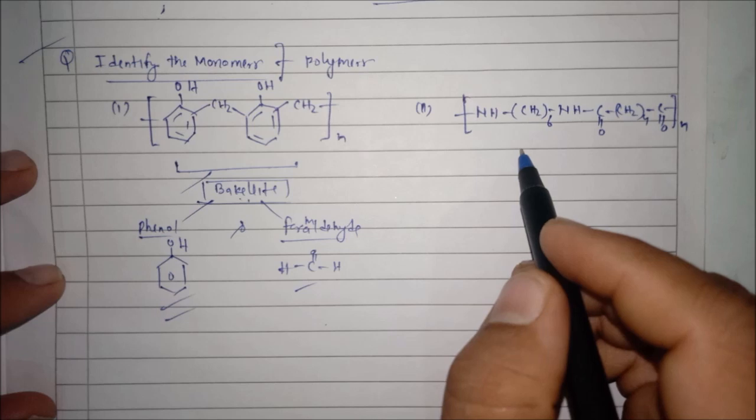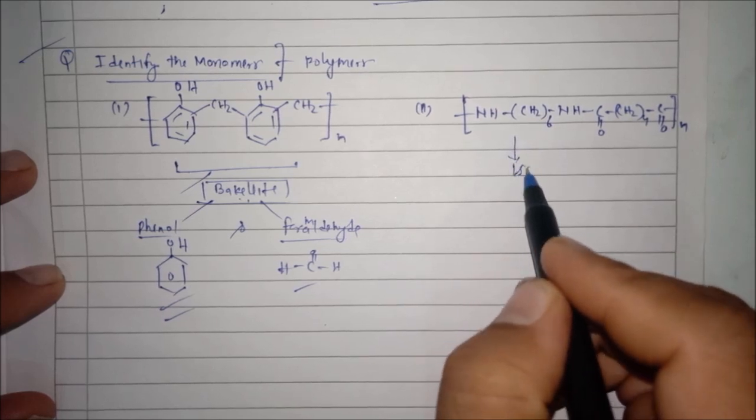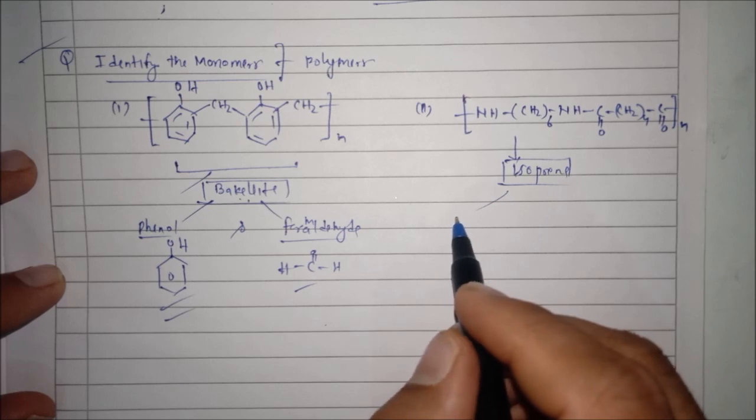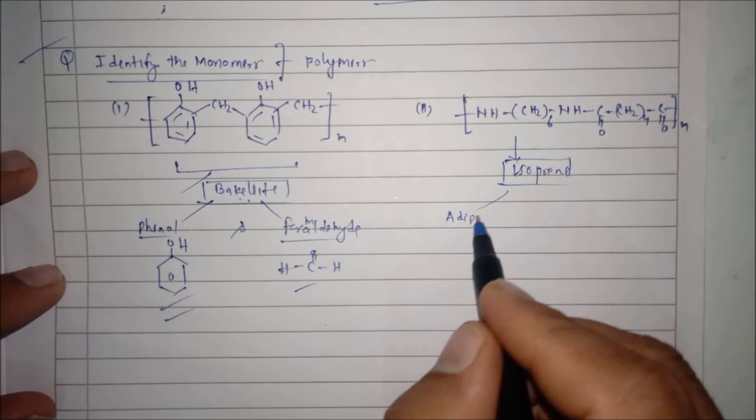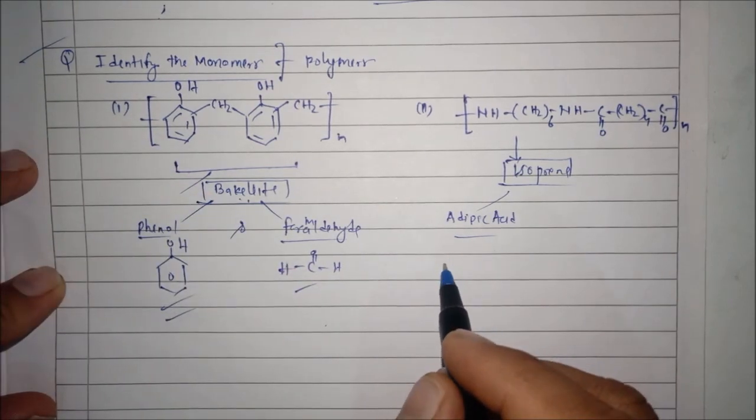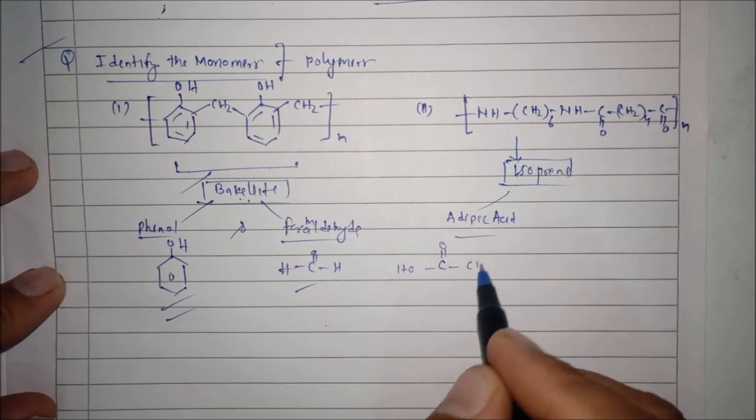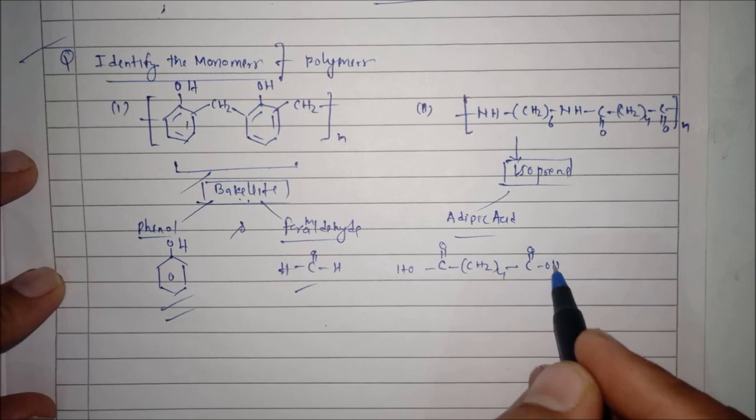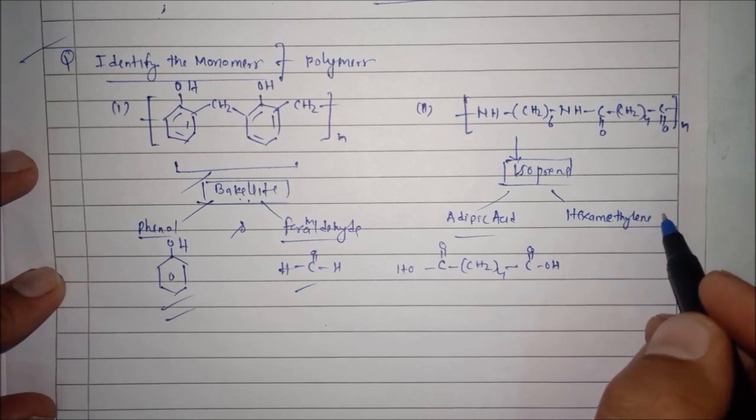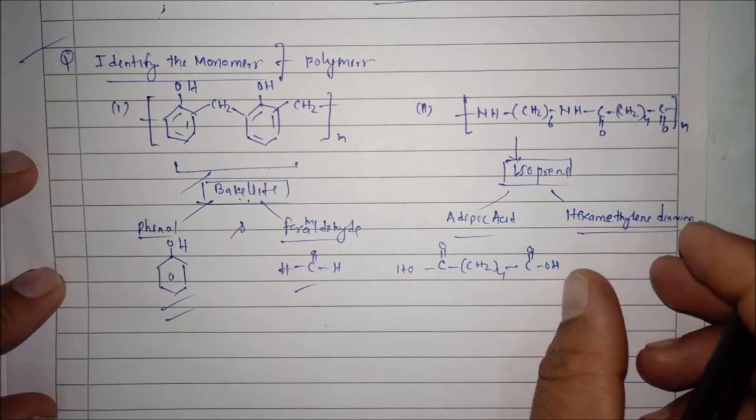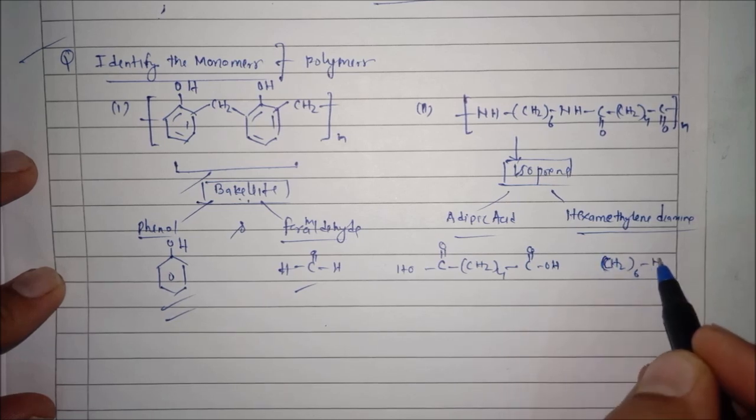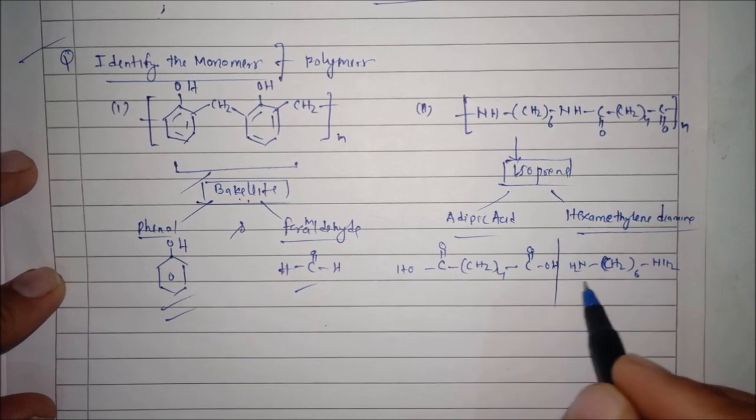In the second case, this polymer is having monomers called adipic acid. Adipic acid is C double bond O-OH, then CS to base 4-C double bond O-OH. Next one is hexamethylene diamine. It is hexamethyl diamine: it will be CH2 base 6-NH2, and here also NH2.